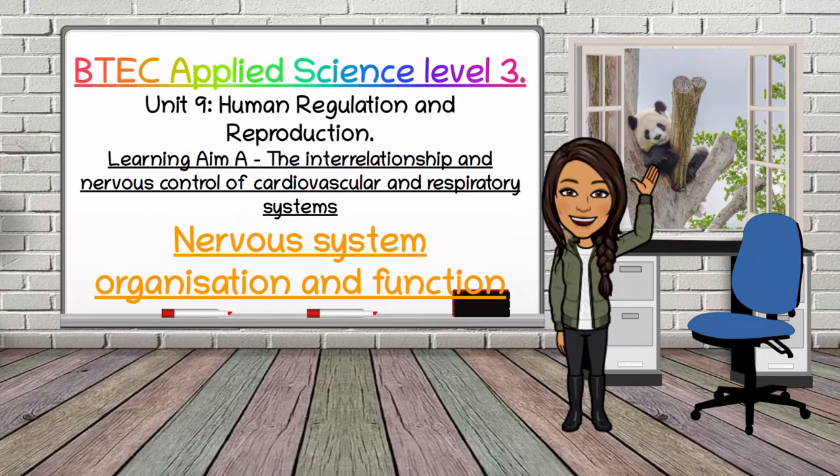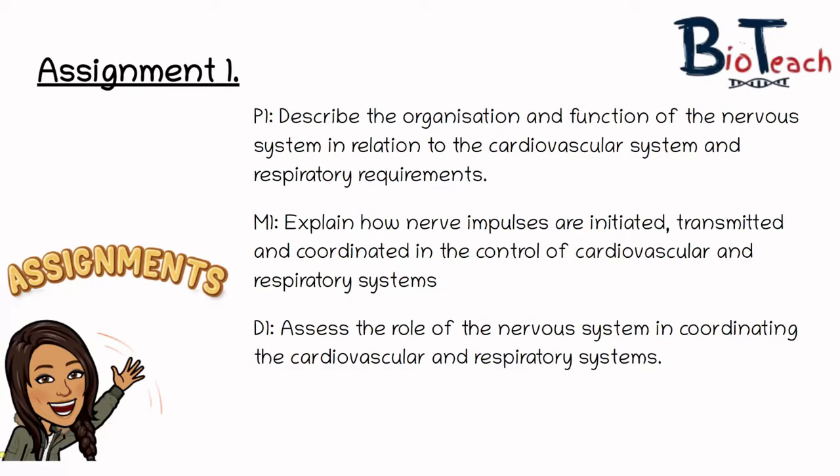Before we get going, I just wanted to remind you of the pass, merit and distinction criteria for this learning aim. For P1 you need to be able to describe the organisation and function of the nervous system in relation to the cardiovascular system and respiratory requirements. For M1 you need to explain how nerve impulses are initiated, transmitted and coordinated in the control of cardiovascular and respiratory systems. For D1 you have to assess the role of the nervous system in coordinating the cardiovascular and respiratory systems.